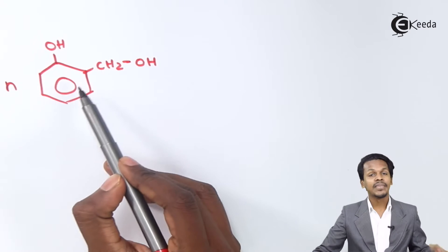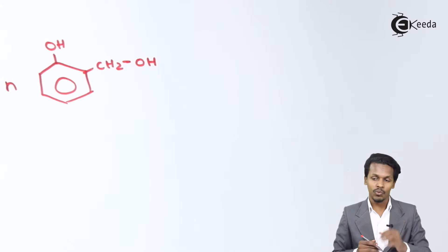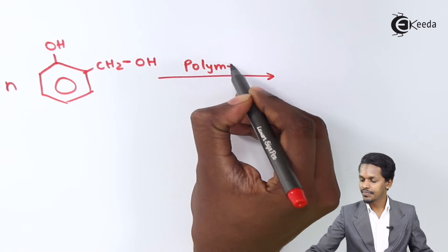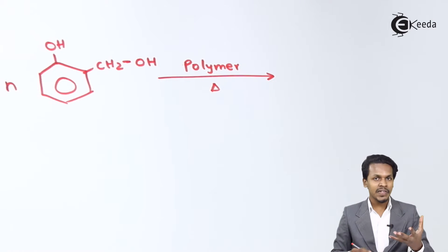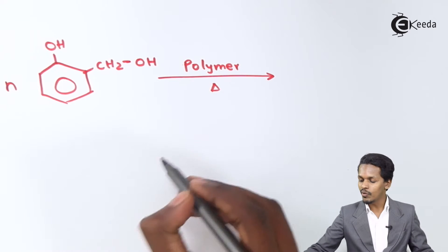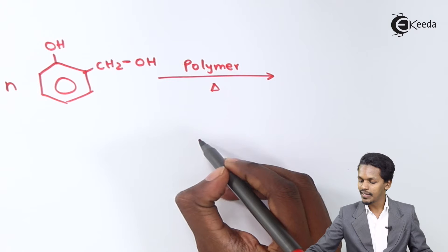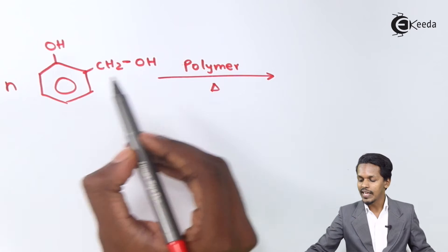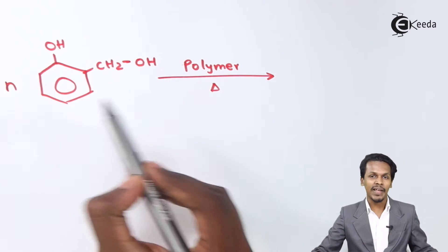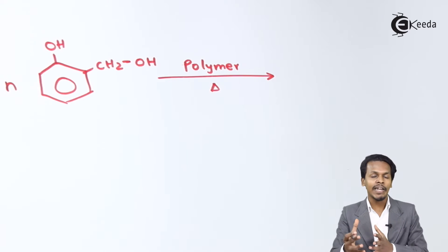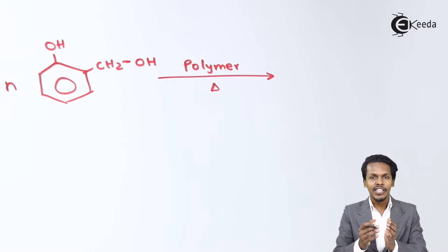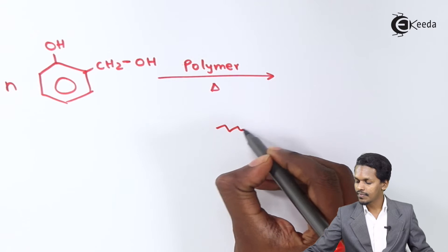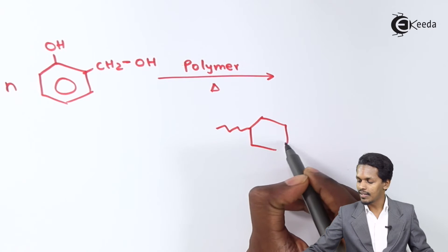We consider ortho-hydroxybenzyl alcohol as the monomer. Suppose we take n moles of this monomer. On polymerization — by providing a certain temperature and using a certain initiator and catalyst — we get a repeating unit. This is a condensation reaction, and when another mole of ortho-hydroxybenzyl alcohol is added, water is removed as a byproduct.